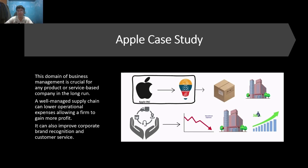With the help of the Apple case study, we explored how a supply chain management strategy can be established. This domain of business management is crucial for any product or service-based company in the long run. A well-managed supply chain can lower operational expenses, allowing a firm to gain more profit. It can also improve corporate brand recognition and customer service.